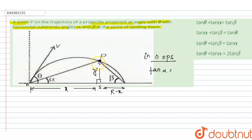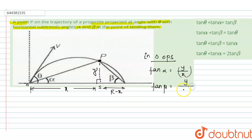The value of tan alpha equals perpendicular over base, which is y over x. Similarly, tan beta equals y over (r minus x). Let us call these equation one and equation two.